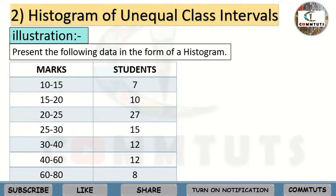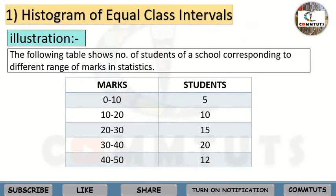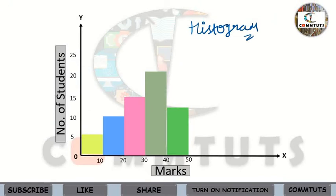In the previous tutorial I taught you how to make histograms — how to draw histograms with equal class intervals and with unequal class intervals. Now let's see how polygons are drawn when we have drawn a histogram.